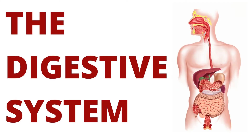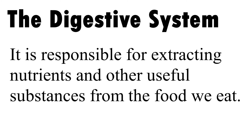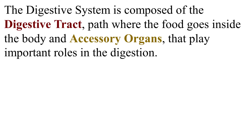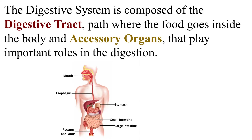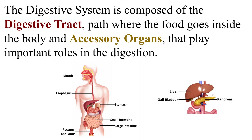The Digestive System is responsible for extracting nutrients and other useful substances from the food we eat. It is composed of the digestive tract — the path where the food goes inside the body — and accessory organs that play important roles in digestion.